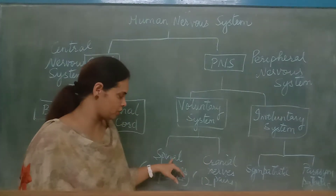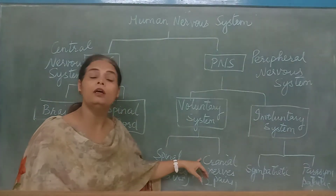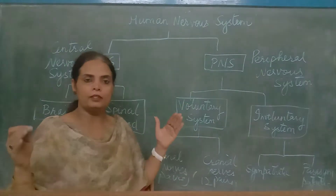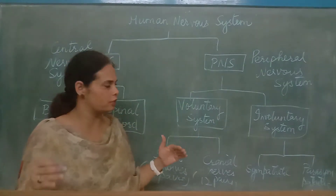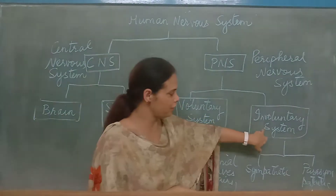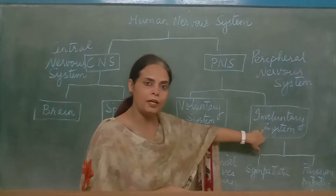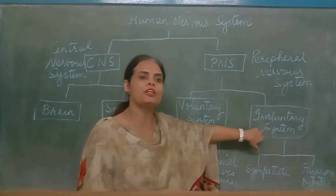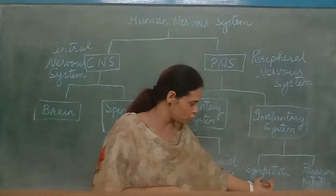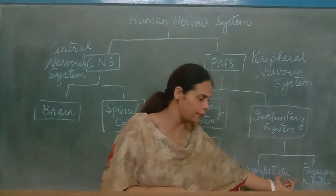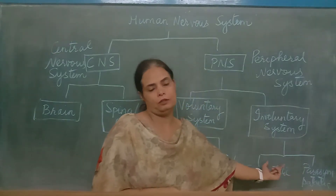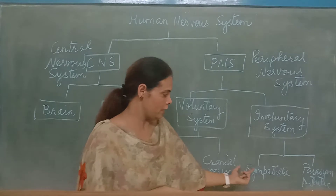These spinal nerves and cranial nerves originate from the spinal cord and the brain and innervate the different organs of the body. The involuntary system also originates from the brain and spinal cord, but it consists of the sympathetic and parasympathetic nerves.